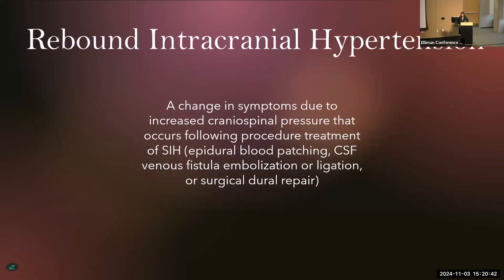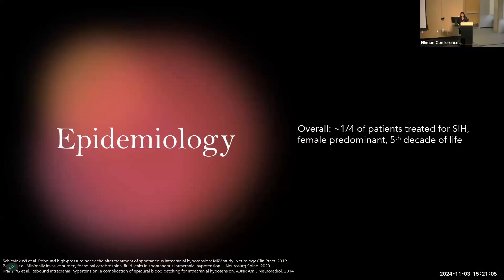So what is RIH? Descriptively, it's a change in symptoms due to increased cranial spinal pressure that occurs following procedural treatment of SIH — and that could be epidural blood patching, CSF venous fistula embolization, ligation, or surgical dural repair. But what we don't know, and what we really need, is a formal diagnostic criteria for RIH. Formal diagnostic criteria, along with a standardized process and standardized time points for assessing RIH symptoms, can help us capture the true incidence of RIH.